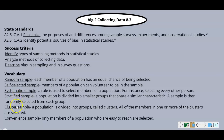Systematic sample: a rule is used to select members of a population. For instance, selecting every other person would be the rule used to choose a systematic sample.